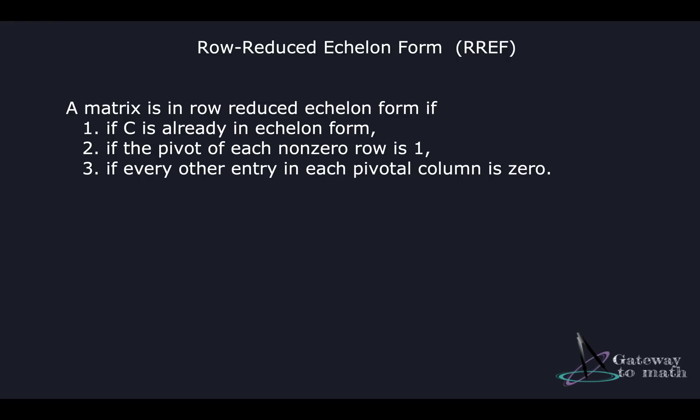Now let's move to the next method: row reduced echelon form. A matrix is in row reduced echelon form if: it is already in echelon form; the pivot of each non-zero row is 1; and every other entry in each pivotal column — both above and below the pivot — is zero. This last condition is where row reduced echelon form differs from regular echelon form. In regular REF, only entries below the pivot had to be zero; in RREF, entries above the pivot must also be zero.